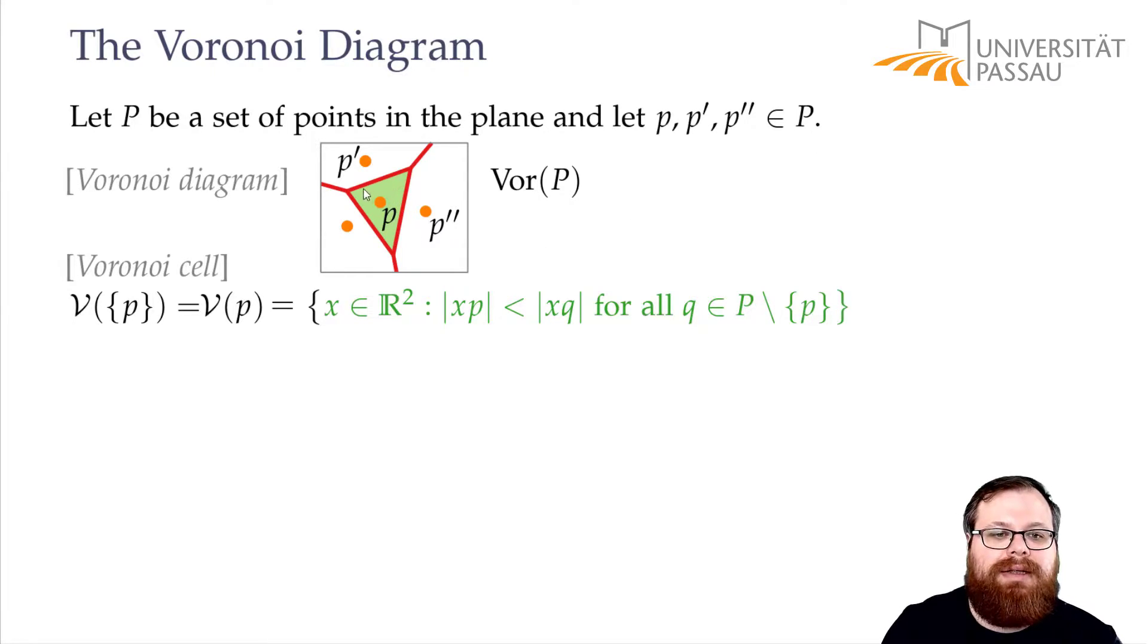This is exactly the green points here. This always exists for every point, so at least the point itself has to lie in its own Voronoi cell. So this cannot be empty.